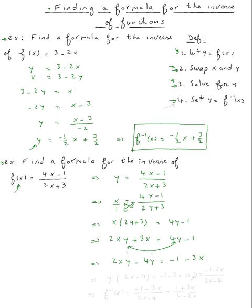I'm still looking for y, there are 2 y's, so I have to factor the y. So y times 2x minus 4 is equal negative 1 minus 3x. Therefore y equals negative 1 minus 3x over 2x minus 4.